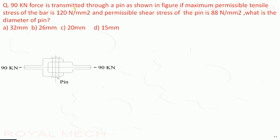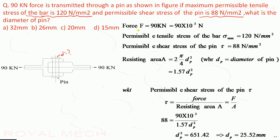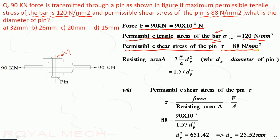A 90 kilo Newton force is transmitted through a pin as shown in figure. The maximum permissible tensile stress of the bar is 120 N per millimeter square and the permissible shear stress of the pin is 88 N per millimeter square. We need to find the diameter of the pin. Force applied is 90 × 10³ Newtons.